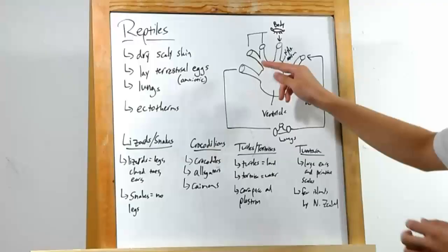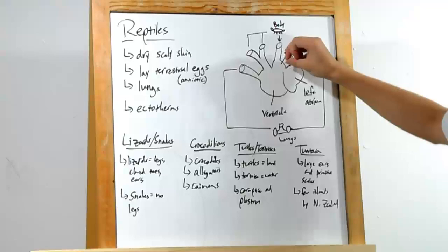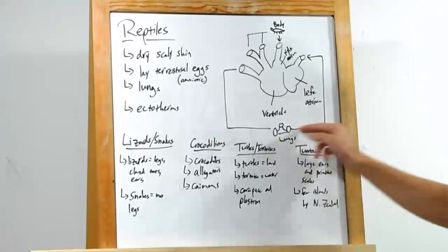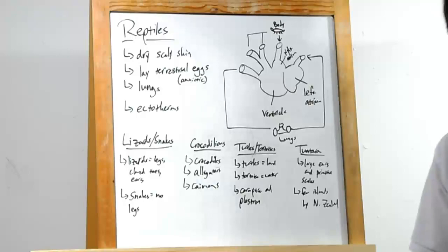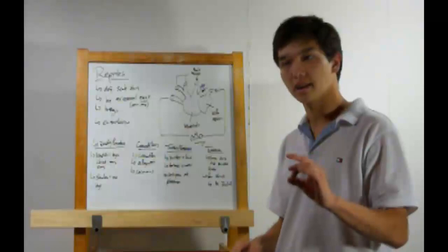So oxygen-poor blood will come in from the body. It will enter in the right atrium and then enter the ventricle from there. The ventricle will then pump it out and it will go through the lungs, becoming oxygen-rich blood. It then re-enters the heart through the left atrium, comes into the ventricle, and is pumped back out through the body. Oxygen is depleted, comes back into the right atrium, over again. Again, two loops, one through the body, one through the lungs.